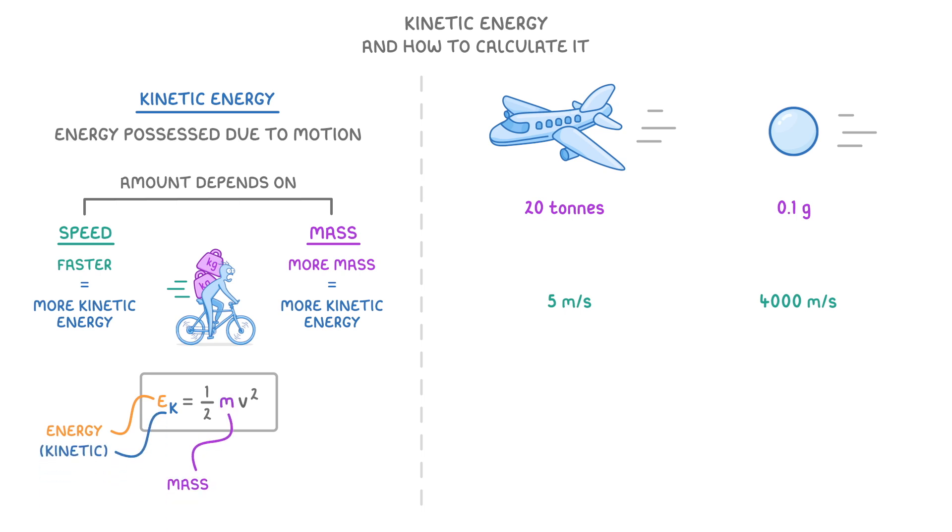Then m is mass, which we measure in kilos, and v is velocity, which for the sake of this question is the same as speed, and is measured in meters per second.